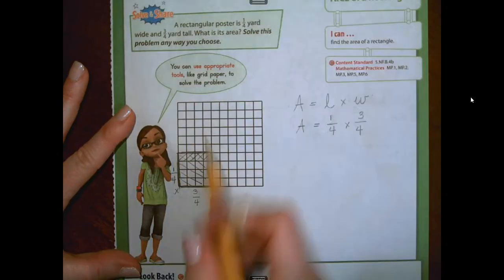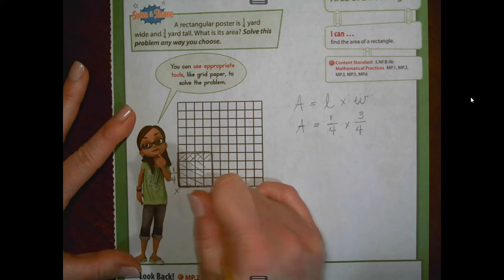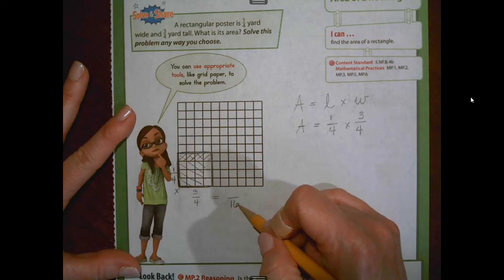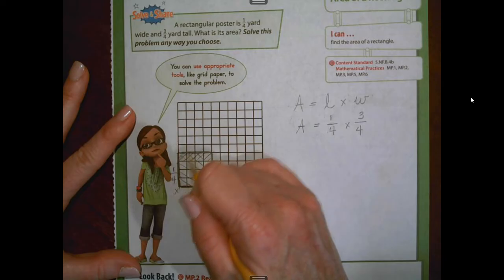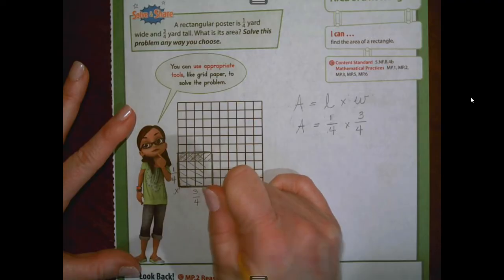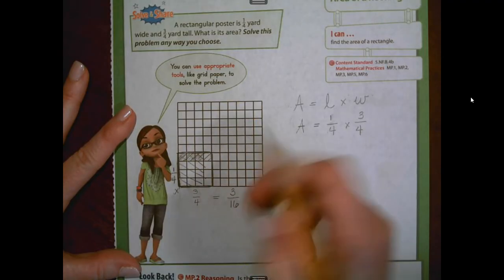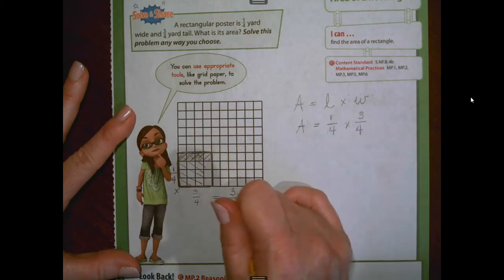So what we're going to do is we're going to shade one-fourth, one out of four of the rows, one direction. We're going to shade three-fourths of the columns another direction. And what I notice is that I have four rows of four squares. So I have 16 total units inside one whole. That's my denominator. That's the number of equal parts in a whole.